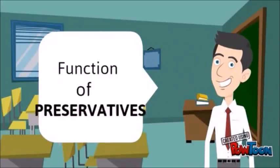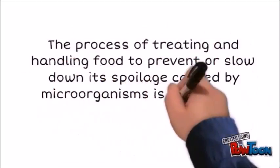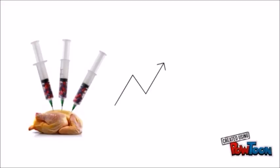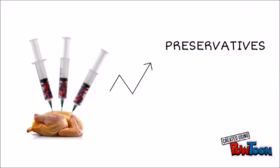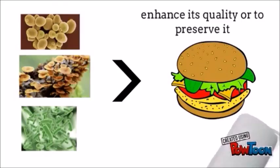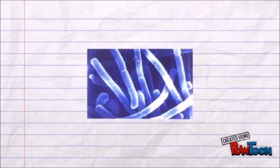The function of preservatives: the process of treating and handling food to prevent or slow down its spoilage caused by microorganisms is called food preservation, and the substances used in this process are called preservatives. Sometimes microorganisms such as benign bacteria, yeast, or fungi are added to a food to enhance its quality or to preserve it. For example, lactic acid bacterium is used to preserve cheese, and yeast is used in the production of alcohol. Food preservation is basically done for four reasons.